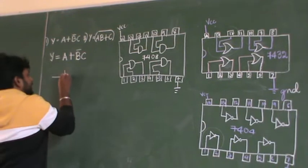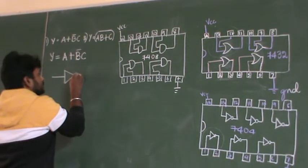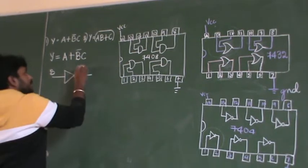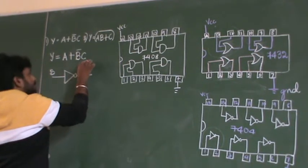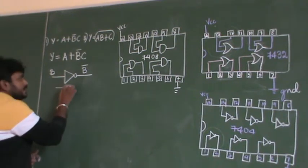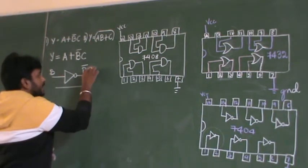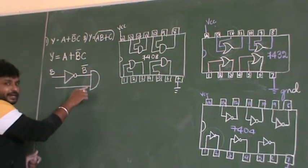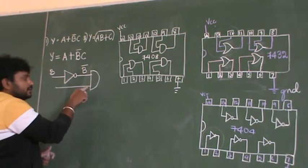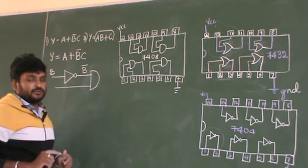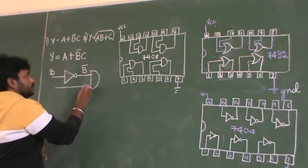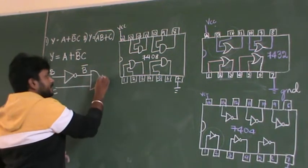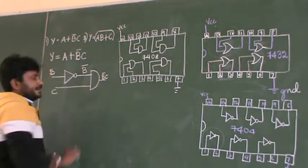You have to pass D into one of the NOT gates. So I will draw this NOT gate here. You will pass D as input, and you will get the output as D̄. For this, you have to perform the AND operation. What is the second input I have to give for the AND gate? I have to put it as C. So D̄ into C — you will get the result at the output of the AND gate.